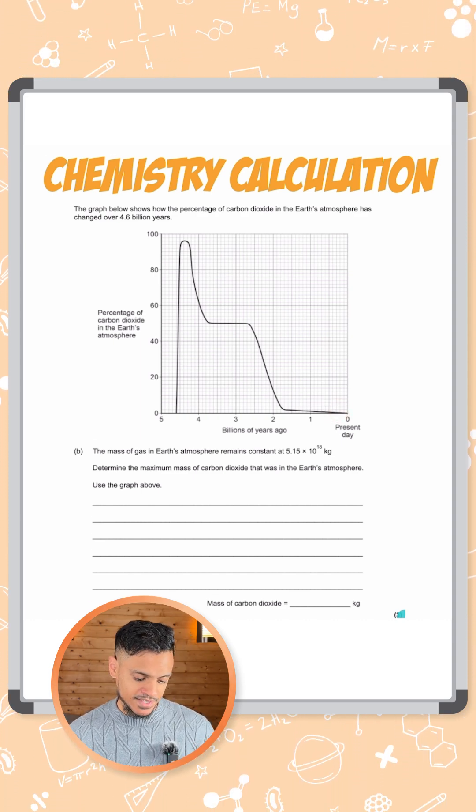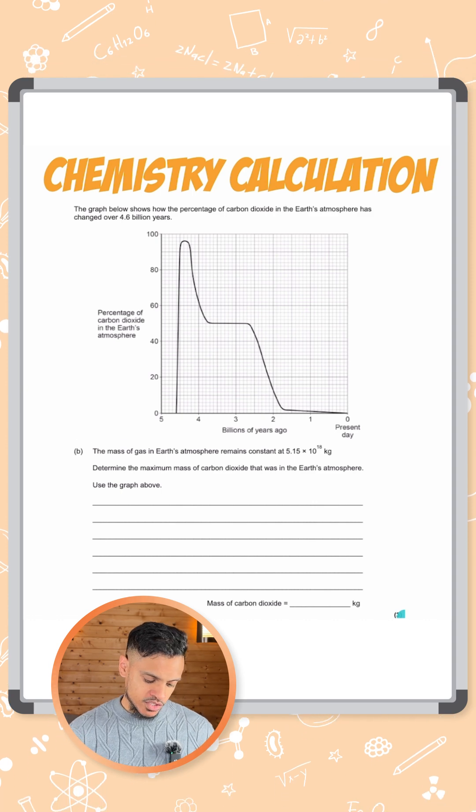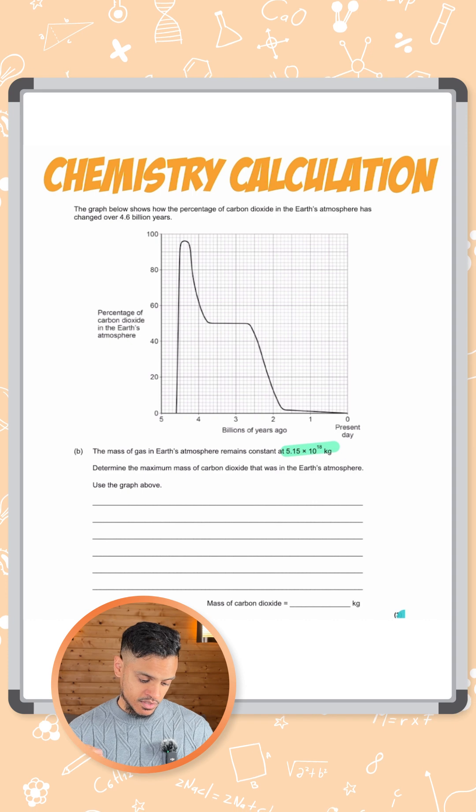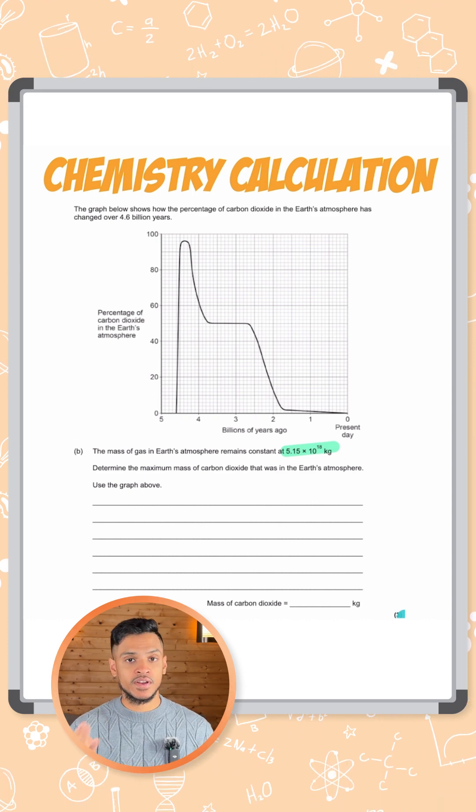The question says the mass of gas in the Earth's atmosphere remains constant at 5.15 times 10 to the 18 kilograms. So that's how much gas we have in our atmosphere.